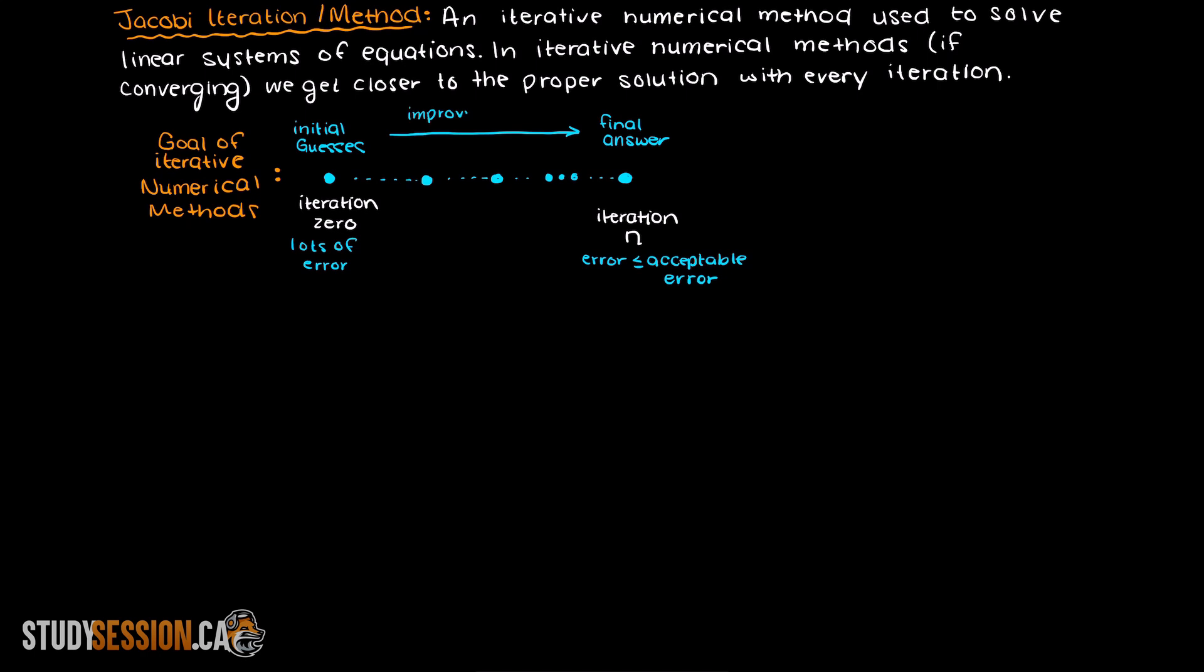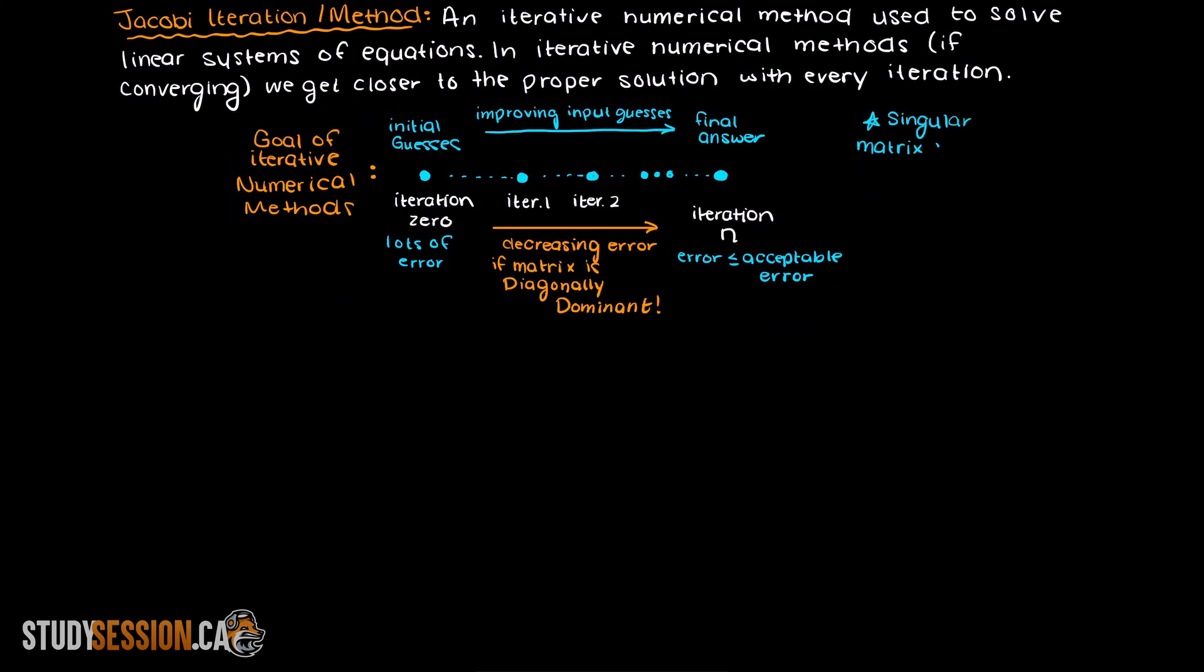Then we will continue this iteration until we reach an acceptable level of error. Before I begin I should note that you cannot use Jacobi iteration when you have a singular matrix. This means that the matrix has no solution, and I will post a video in the description below if you want to learn more about singular matrices.